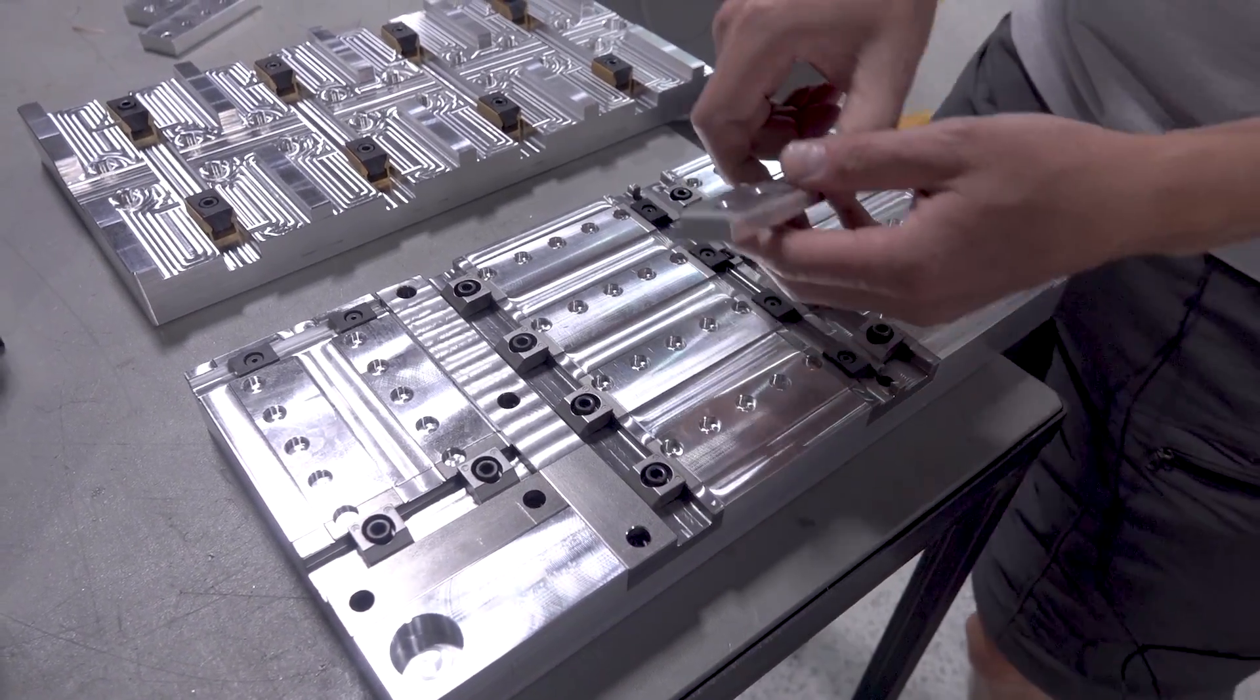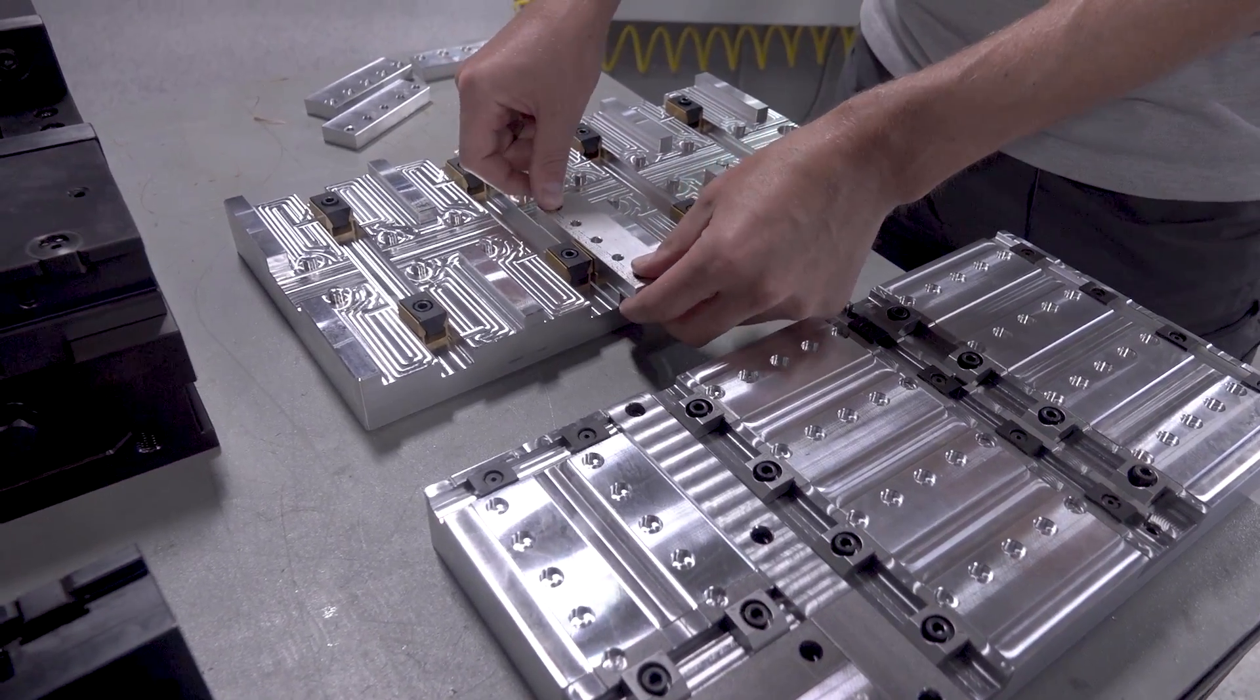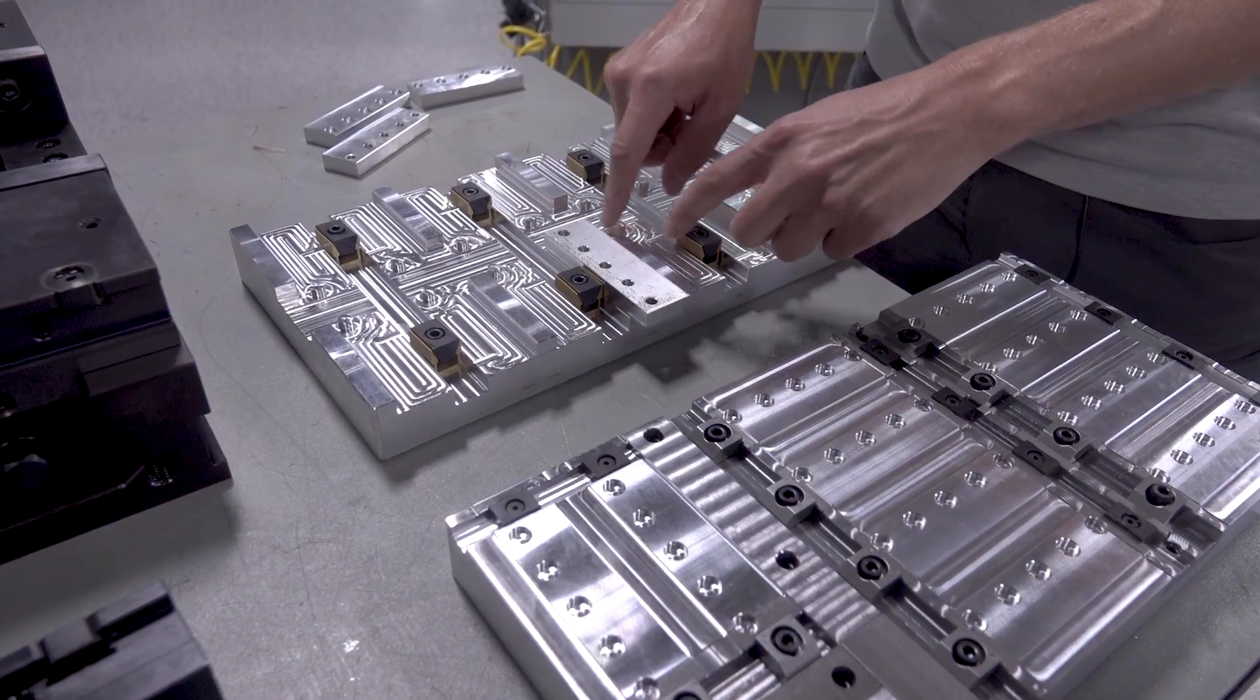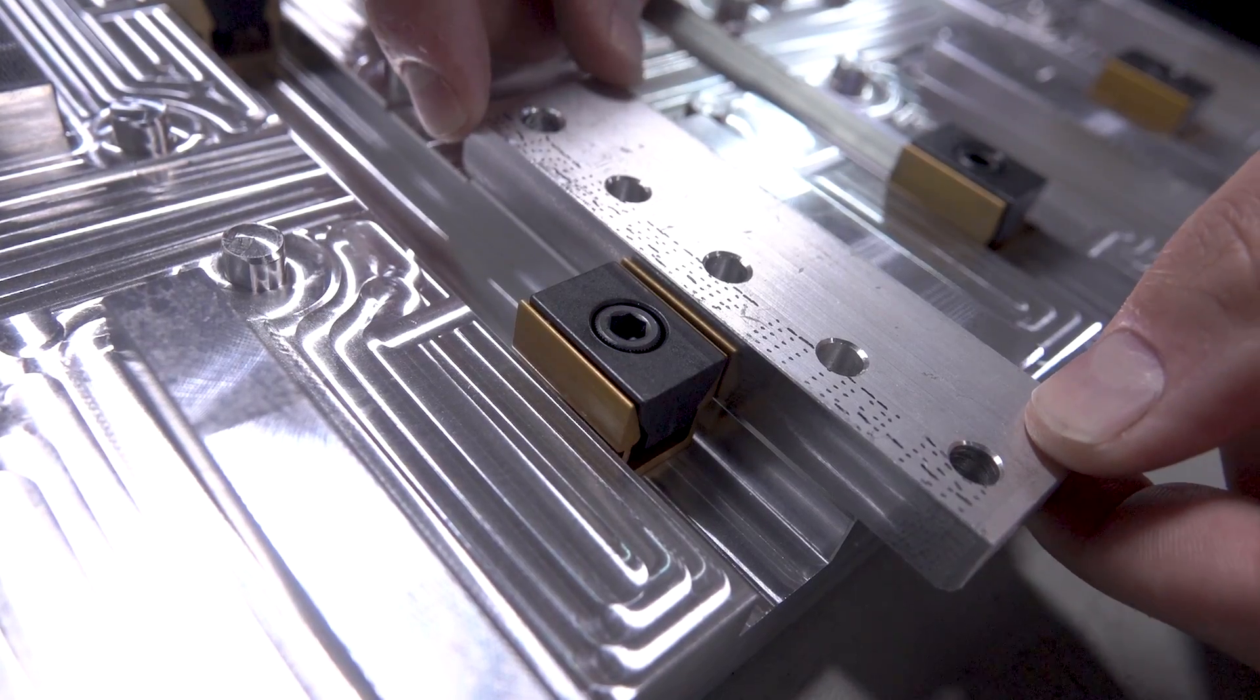Then we can take that part, flip it over here. It locates on this diamond pin that we machined in. A uniforce holds two of them. And we'll be able to do the final machining of the backside as well as clean up these two edges.